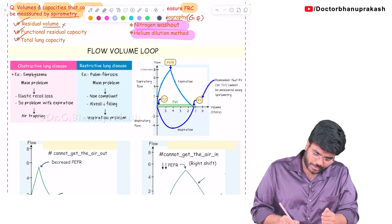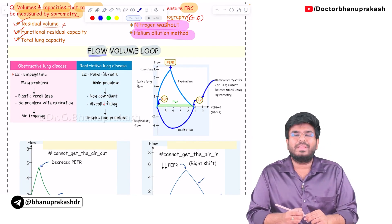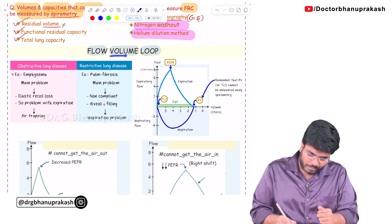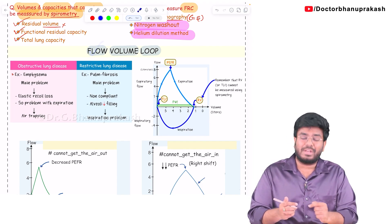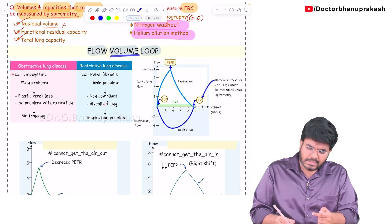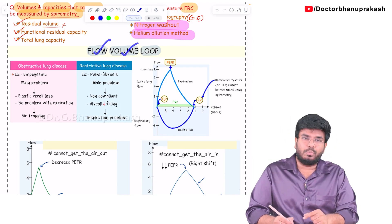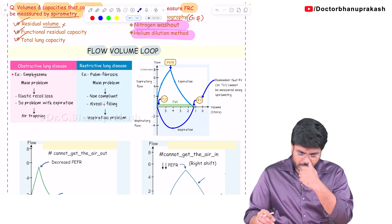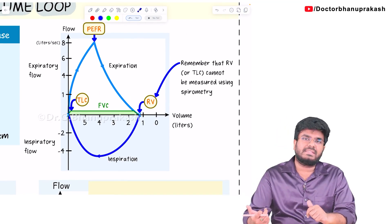Welcome back guys. Let's continue with the topic of flow volume loops. Flow means how the air is flowing — with what velocity the air is entering into or exiting the lungs — and volume means how much air is going and how fast it is going. So we are going to compare the flow and the volume during inspiration and expiration. Now let's look at the flow volume loop. Whenever you see a graph, the first thing you have to check is what's given on the x-axis and y-axis.